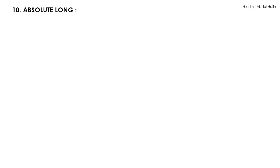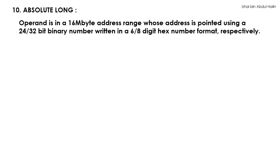Our 10th addressing mode is the absolute long addressing mode. This addressing mode may be used to obtain the operand which lies in a 16-megabyte range. The address of the operand is specified using a 24 or 32-bit binary address written using a 6 or 8 digit hex number respectively. This addressing mode may be used for operands that are byte, word, and long word in length.